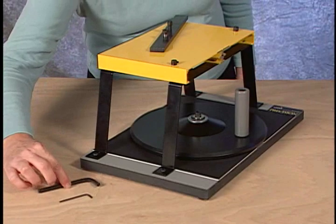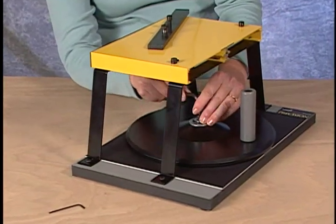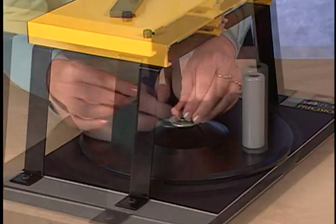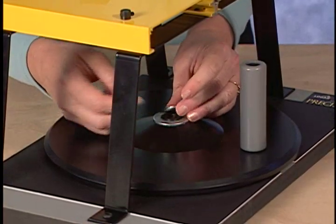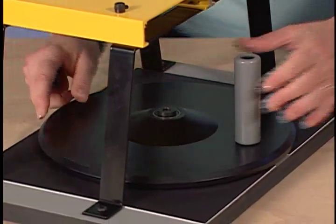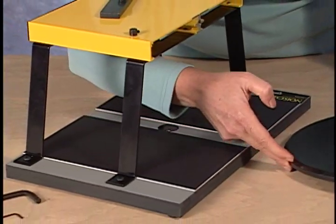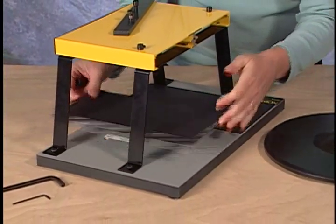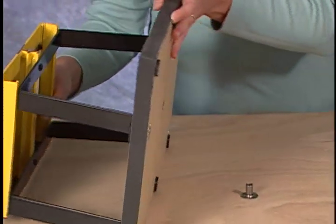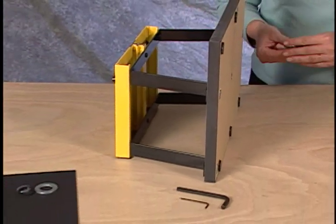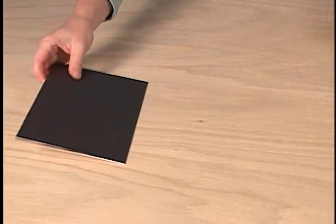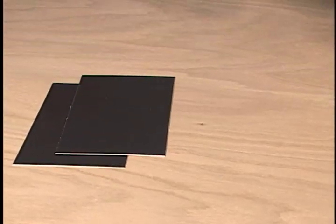To assemble the Precision Sander Elite, first remove the sanding wheel from the base of the sander. The pieces shown here are used for packing only and can be discarded.